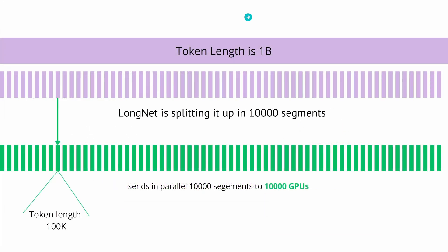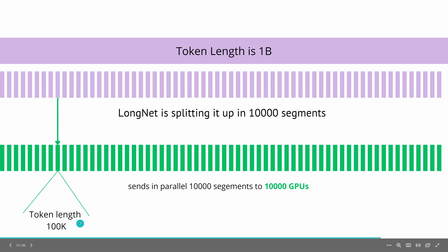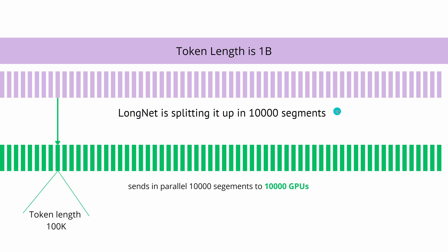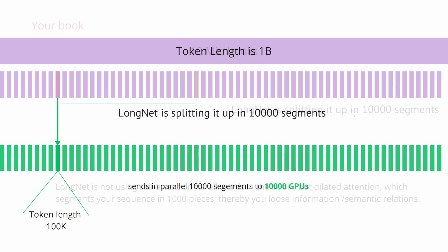Here is another example. You have a token length of 1 billion, as Microsoft claims in this paper. LongNet splits this token length into 10,000 segments. Then you can send these 10,000 segments to 10,000 GPUs in parallel — that's the way you think when you work at Microsoft. In theory, beautiful. But think about it: what you end up with is a token length of 100k on one GPU. All of this just to split up the max token length, send it in parallel to GPUs, and have some long-term correlation. Everybody can decide for themselves if this is worth it.